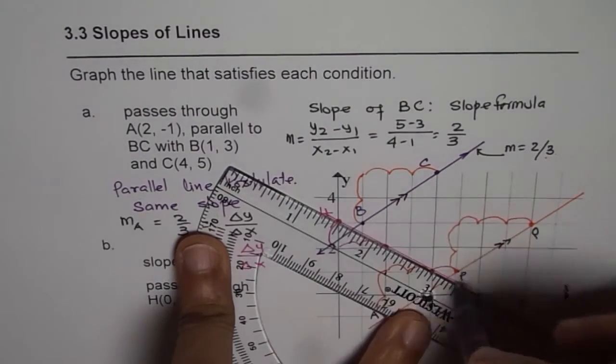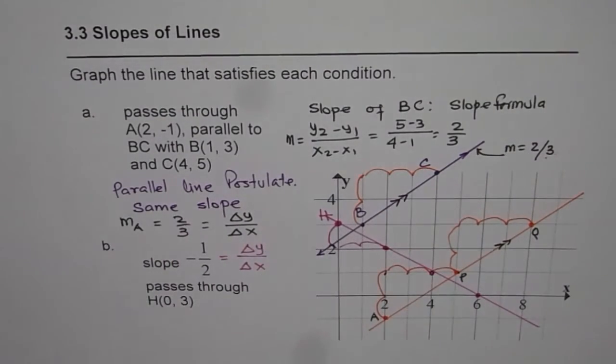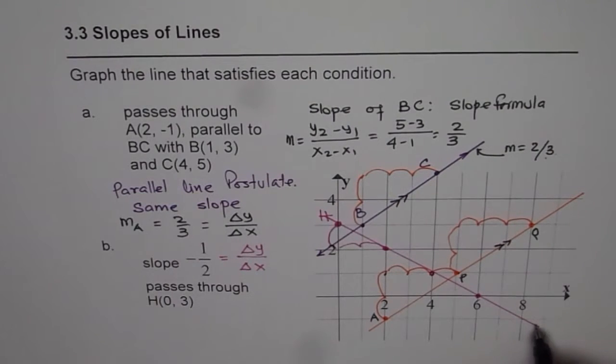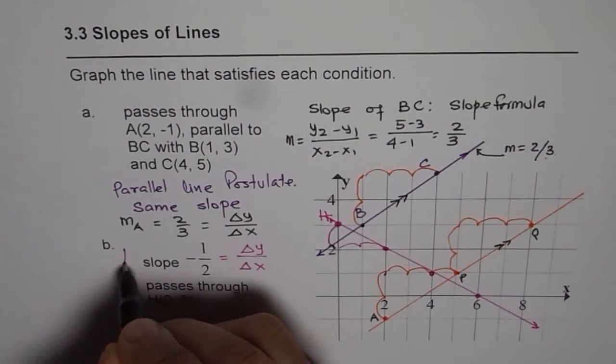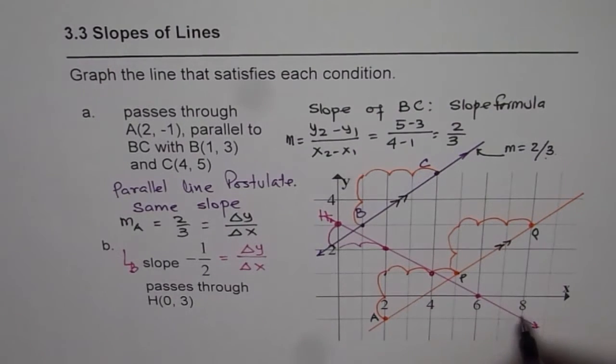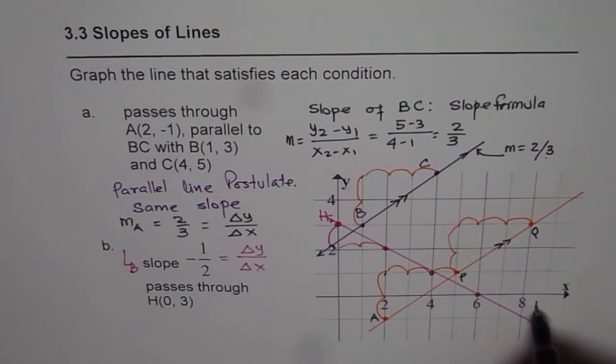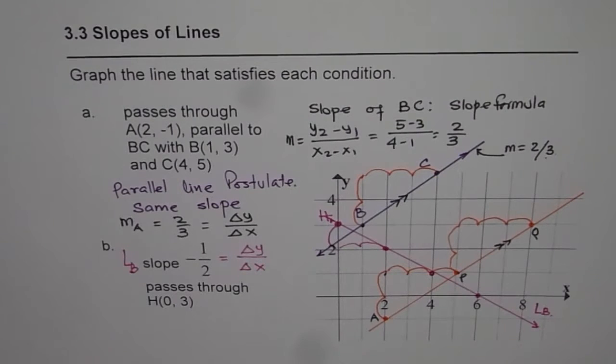That becomes our line for part B. That is how you can draw lines from a given point or condition. I hope that gives you a fairly good idea of how to sketch lines.